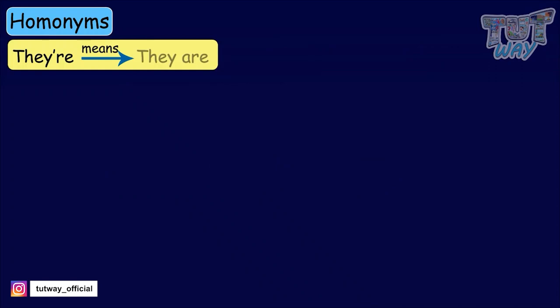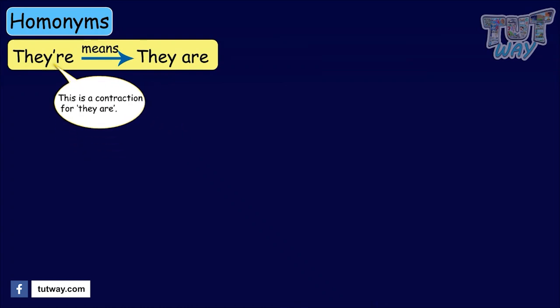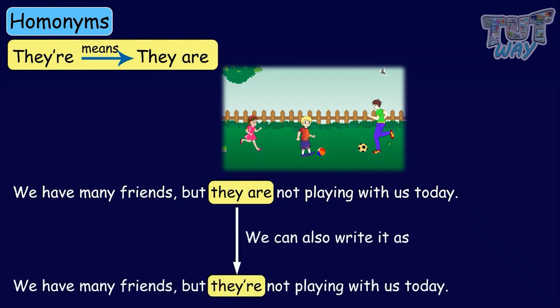They're means they are — this is a contraction for they are. For example: We have many friends, but they're not playing with us today. In the latter sentence, we have used a contraction for they are.